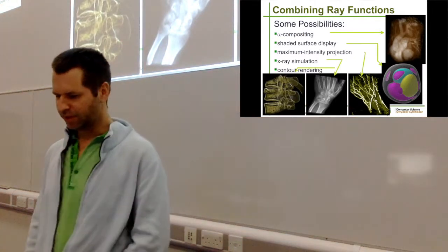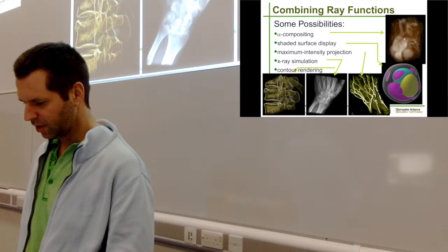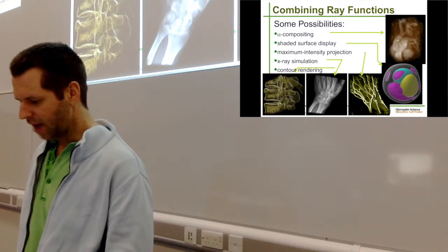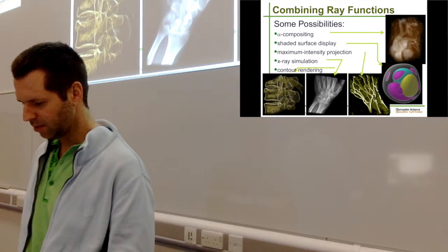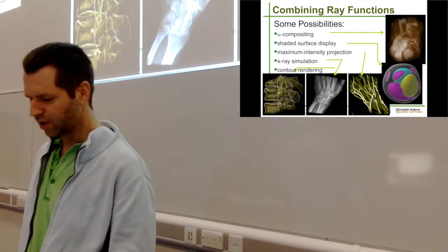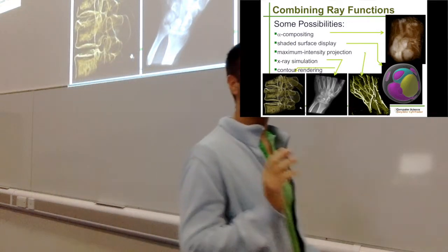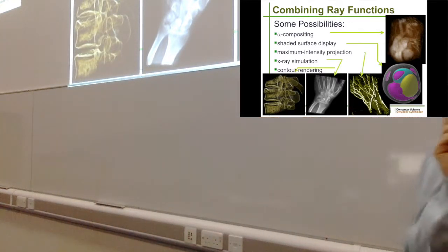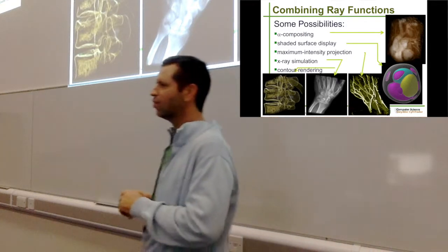Here are some more examples: compositing with shading added to the surfaces, another maximum intensity projection example, an x-ray example, and another using a transfer function that returns the edges or contours of the volume to enhance the contours.